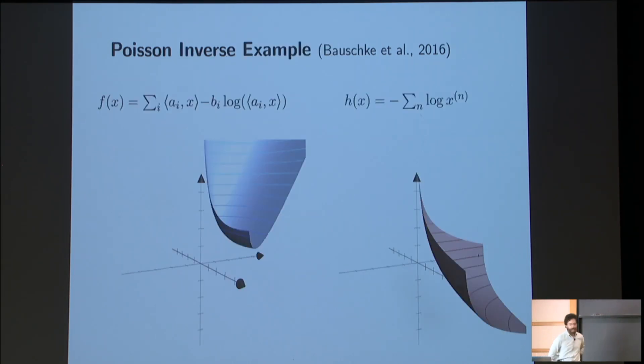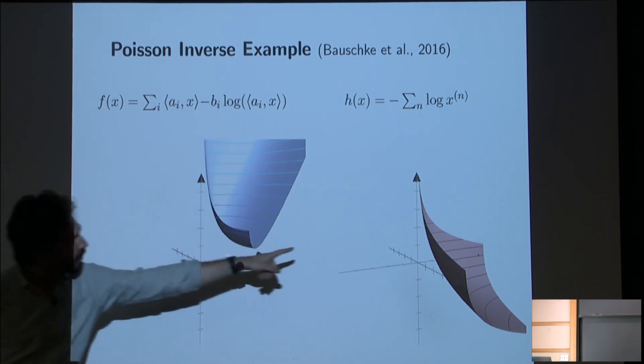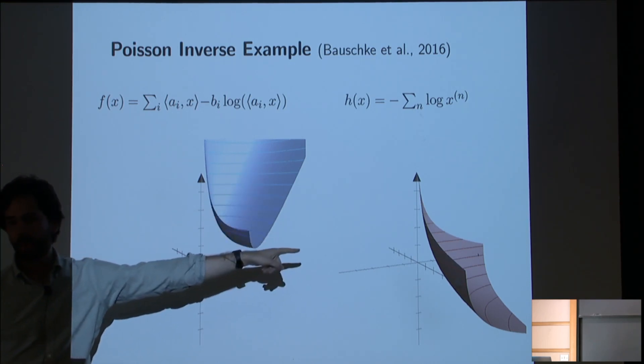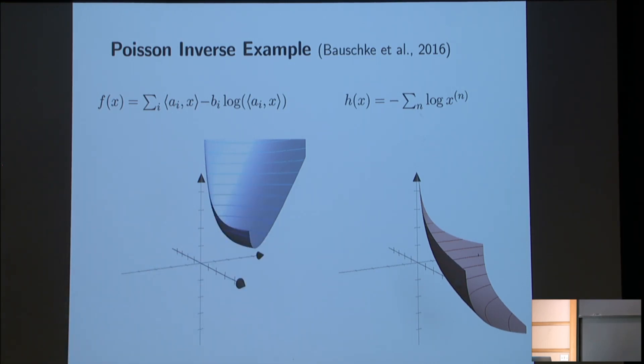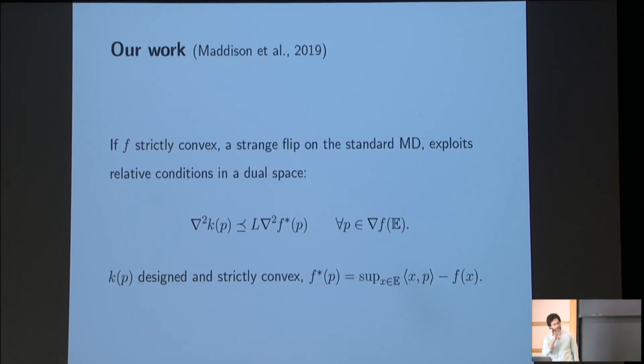And so the example that they consider is trying to optimize this kind of function F of X, which is a Poisson linear inverse problem, which is non-smooth as you approach the origin, because its second derivatives are blowing up, by using an H whose second derivatives are also blowing up as they approach the origin in a similar fashion.